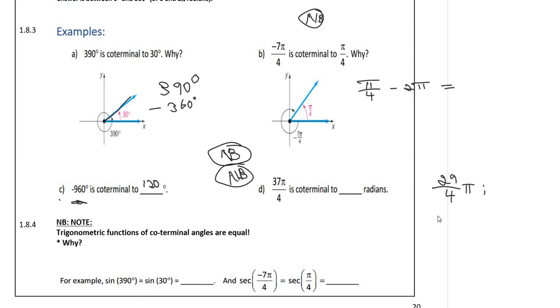Minus 2π, I'm getting 29π over 4. That is a co-terminal angle. Let's remove another 2π. Then I'm getting 21 over 4 π, another co-terminal angle. Let's remove another 2π. Then I'm getting 13 over 4 π. Let me remove another 2π.